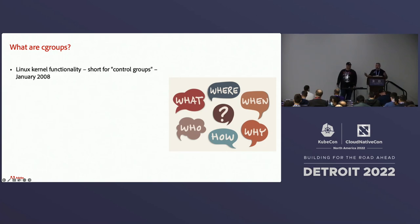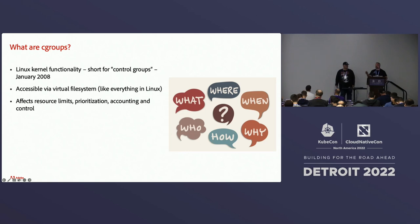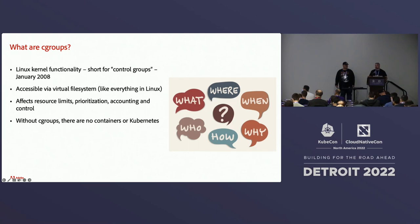So what are cgroups? Cgroups are control groups. Control groups were added to the Linux kernel starting in January of 2008, and they're accessible via a virtual file system like everything else in the Linux kernel. The main function is to help you control and account for resources — at a process level, you can set limits on how much of a resource a process can use, as well as find out what its current usage is. Without cgroups, there are no containers and there is no Kubernetes. This is a feature that all of us use every day, whether we know it or not.